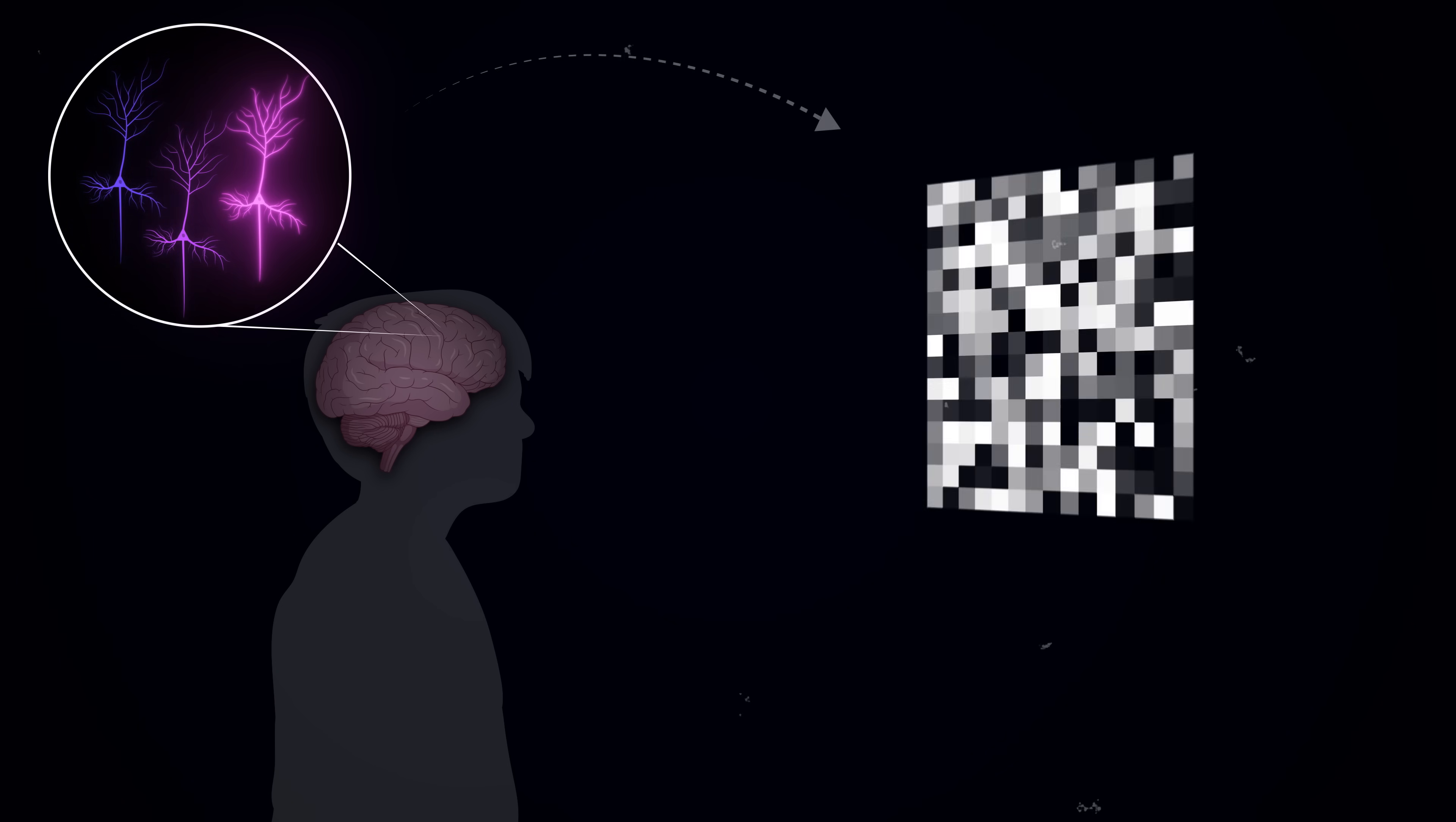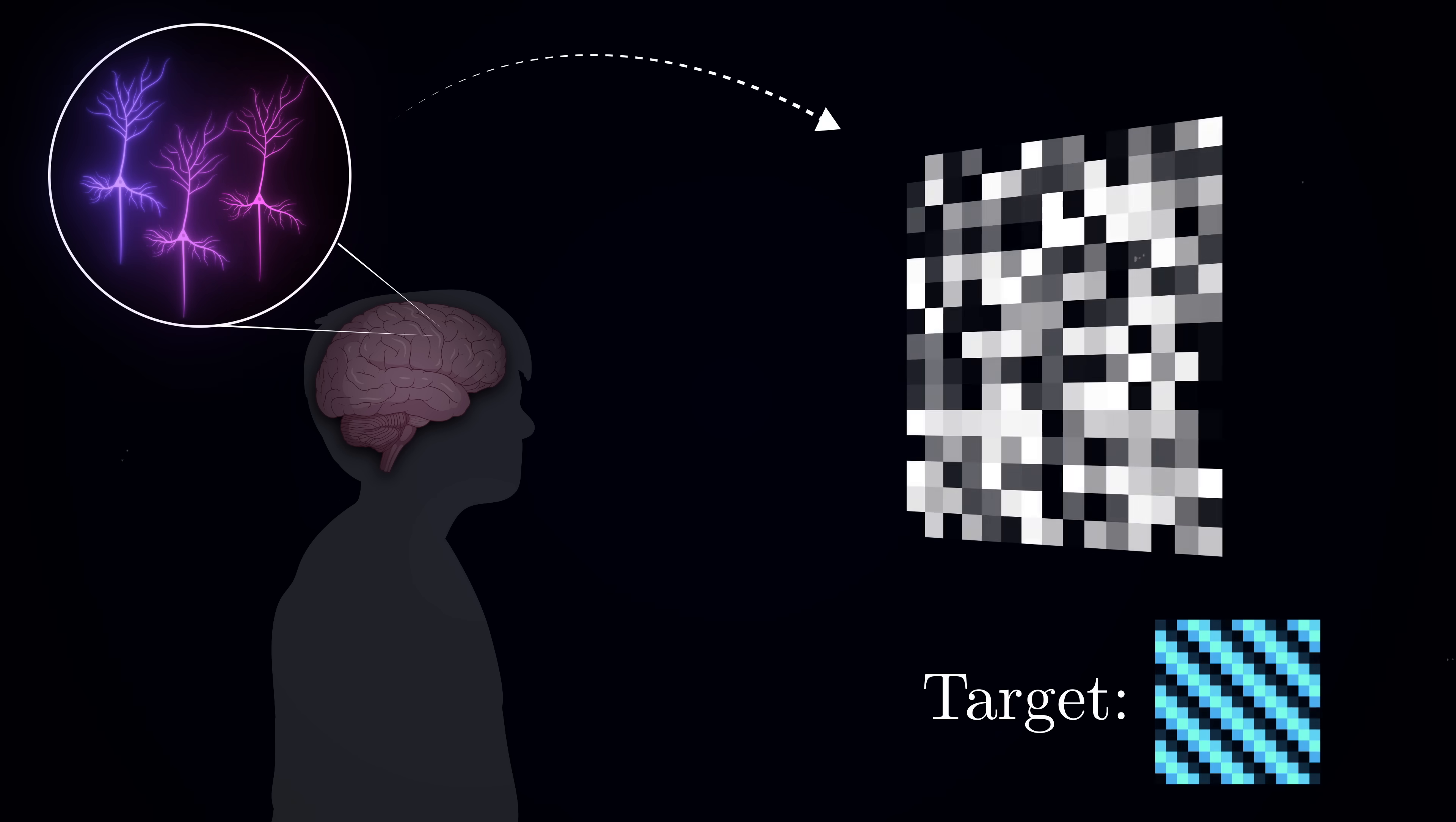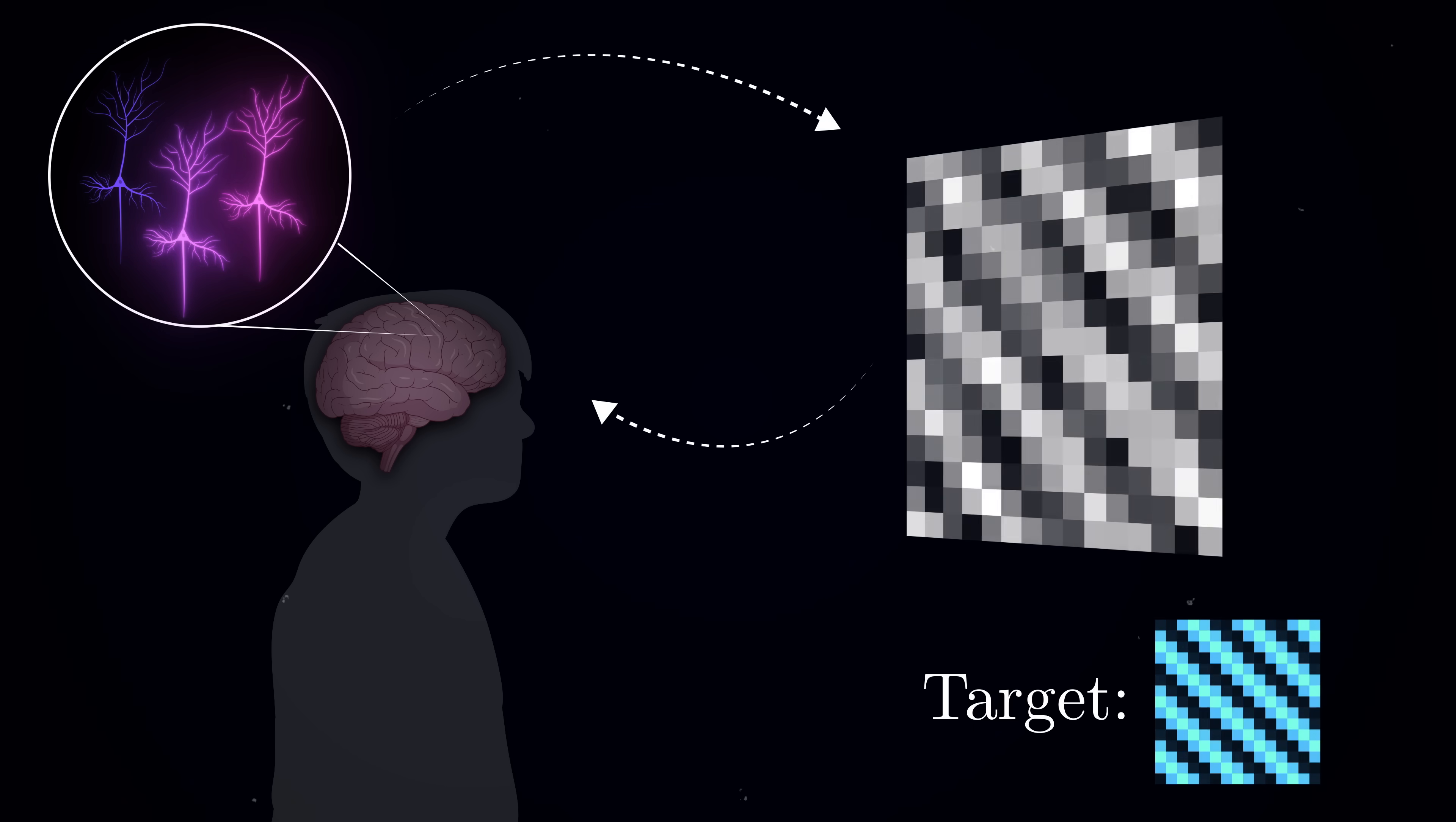Imagine you could see the activity of a hundred neurons from your brain on the screen in front of you, like a hundred tiny lights flickering on and off. Now, suppose you had some kind of target pattern, a specific sequence of lights you needed to match with your own brain. Even though you have never consciously controlled individual neurons before, with enough practice and feedback, you might learn to generate patterns closer and closer to the target. The key insight here is that our brains are constantly learning through trial and error. And with this kind of very direct feedback, it can quickly identify thoughts and mental strategies that work, developing an intuitive feel for how to control the lights on the screen.